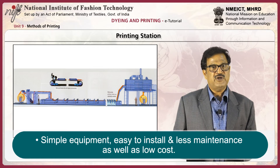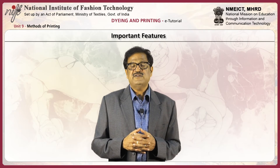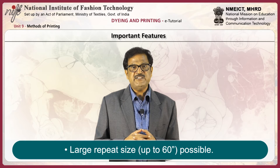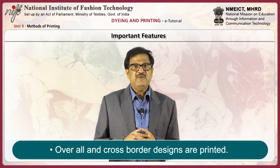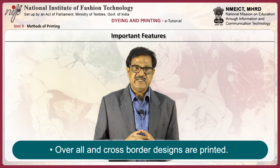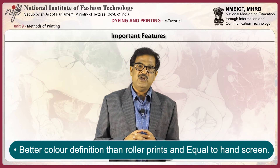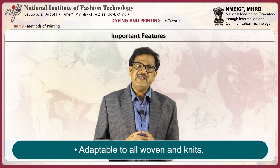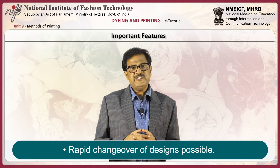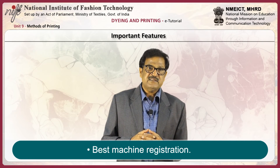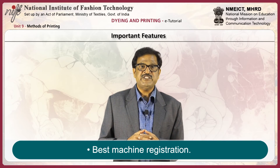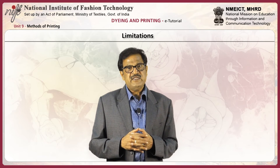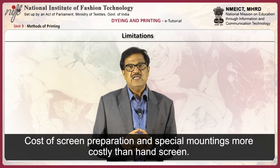Important features of automatic flatbed screen printing: Large repeat sizes up to 60 inches are possible. Overall and cross-border designs can be printed. It provides better color definition than roller prints, equal to hand screen printing. It is adaptable to both woven and knitted fabrics. Rapid changeover of design is possible, and it has the best machine registration, so the clarity of prints is very good.